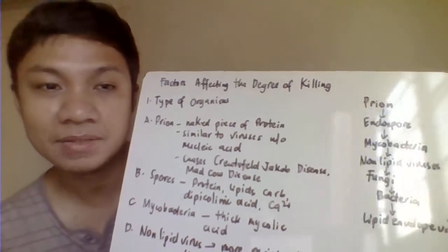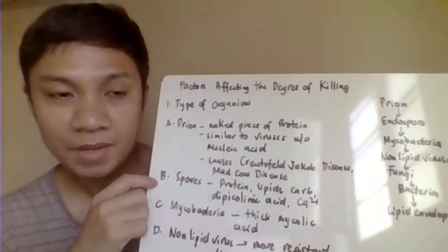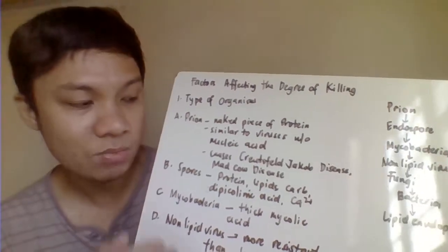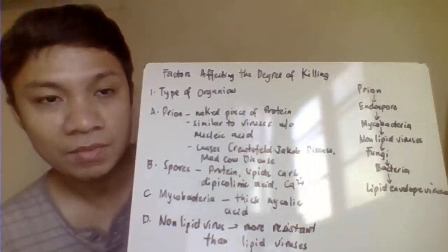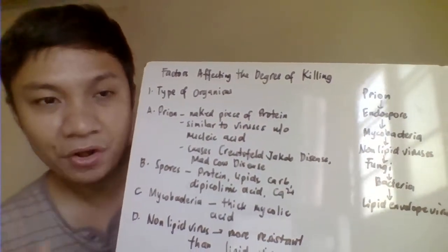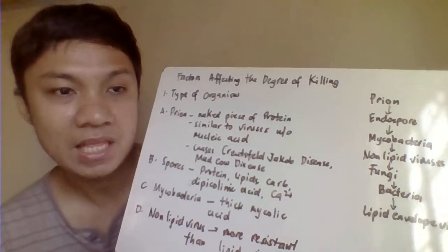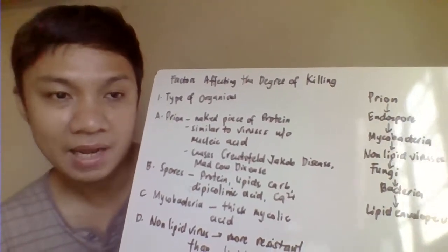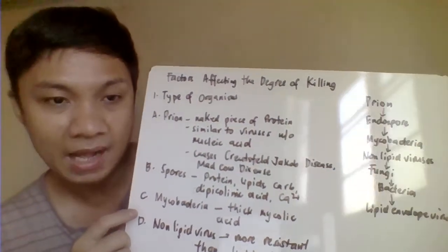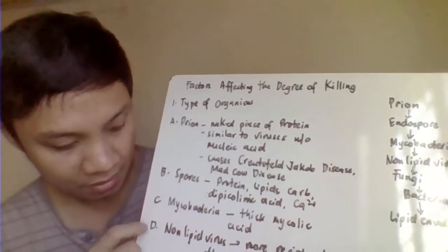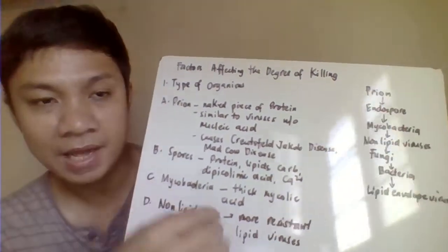Lipid-based structures are easier to kill. Endospores are difficult to kill because their structure combines protein, lipids, carbohydrates, and dipicolinic acid plus calcium, making them highly resistant — difficult for disinfectants or sterilizers to penetrate. Mycobacteria are next because they have a very thick mycolic acid layer that is hard to penetrate, followed by non-lipid viruses, then fungi and bacteria.